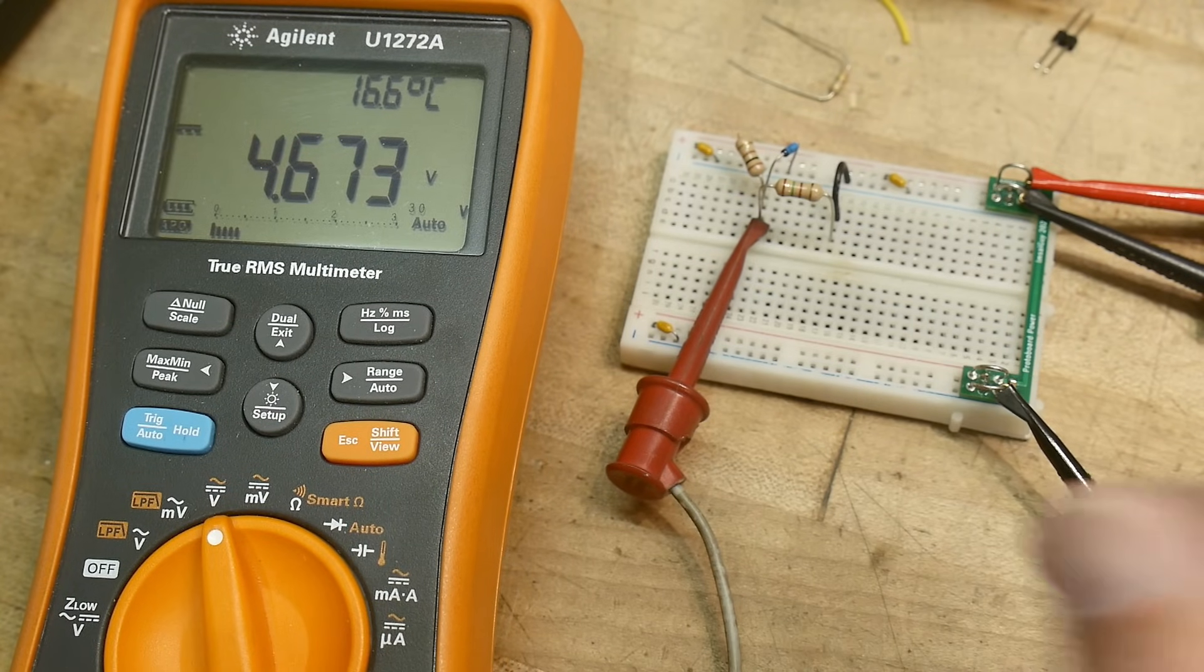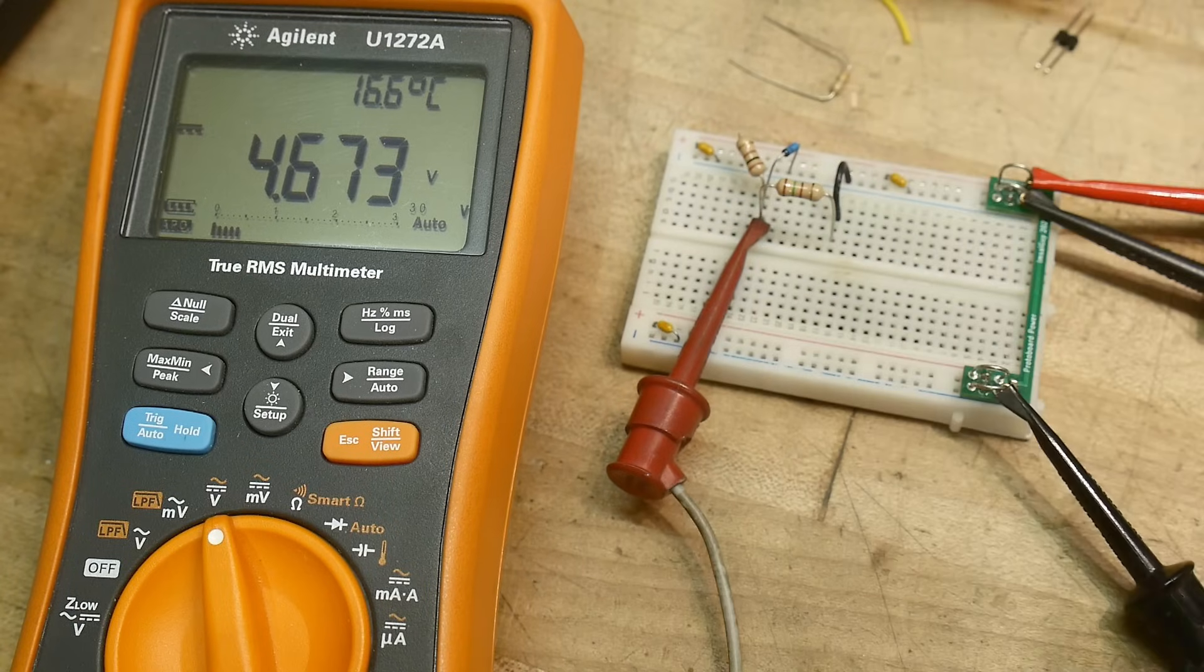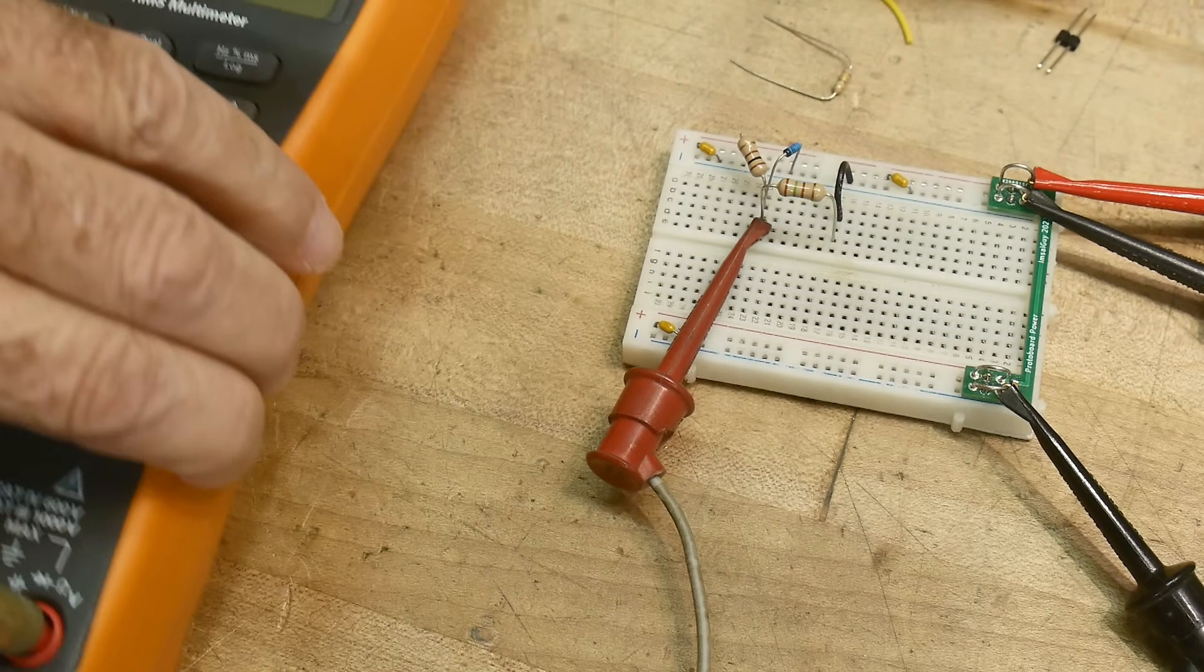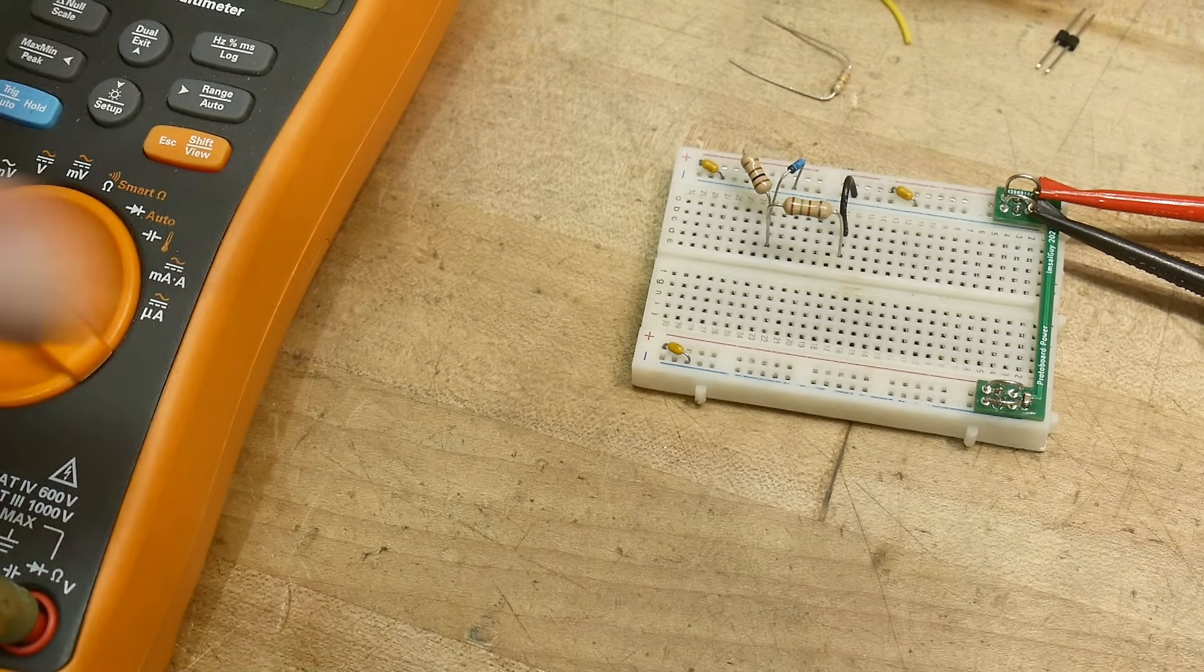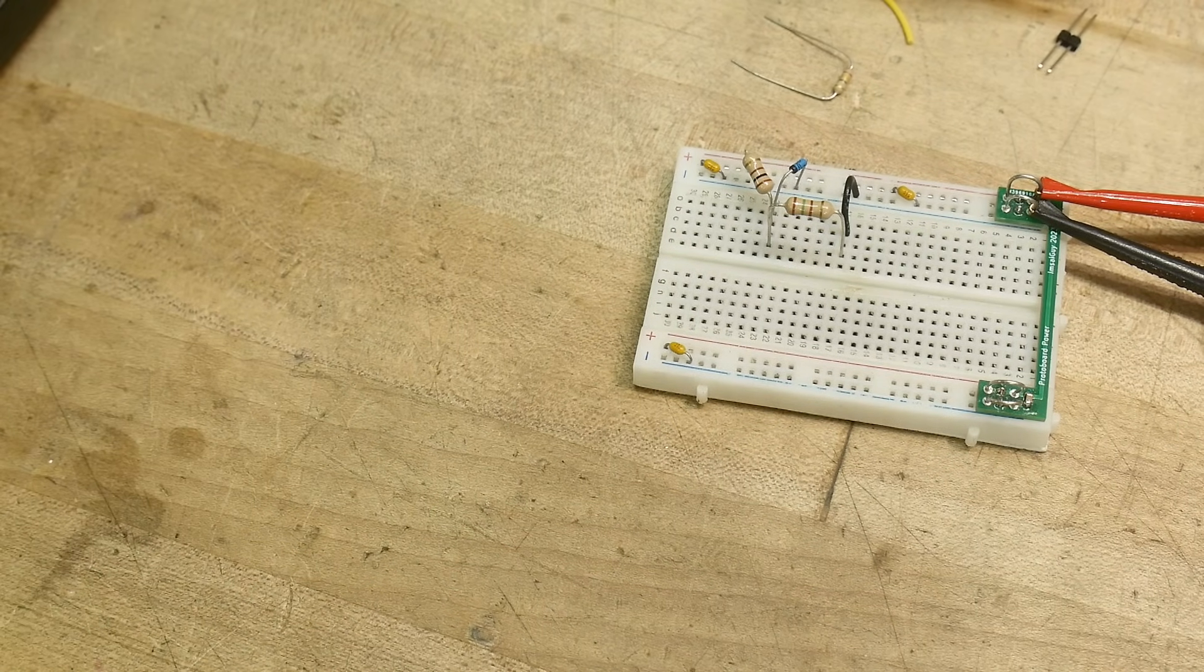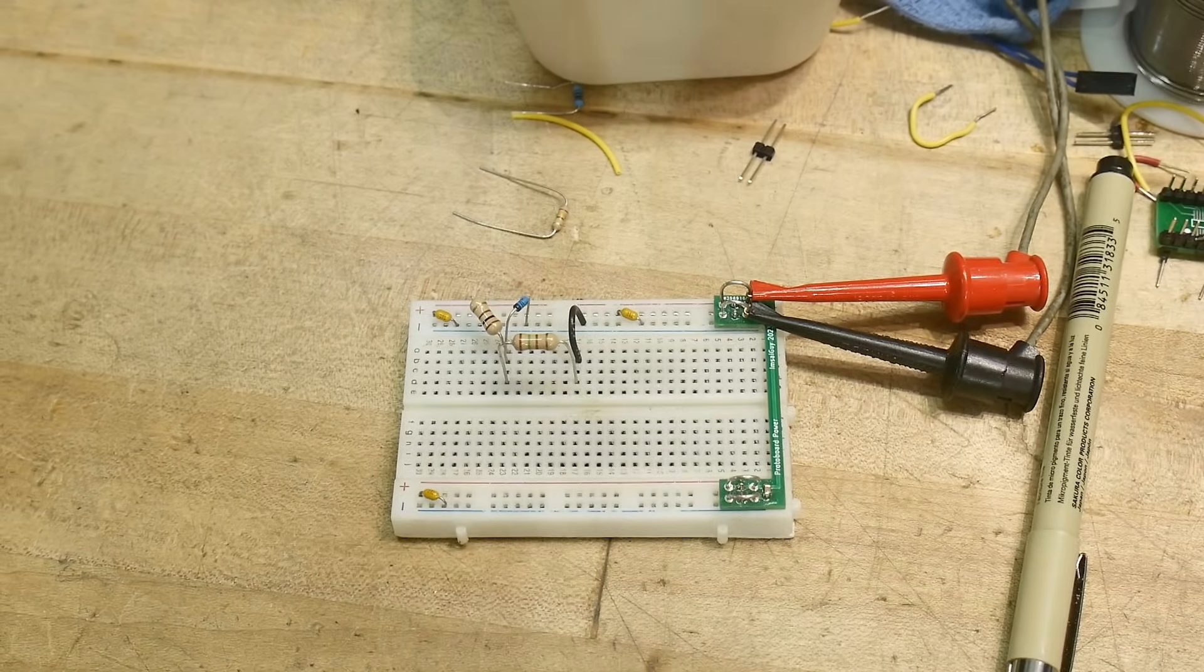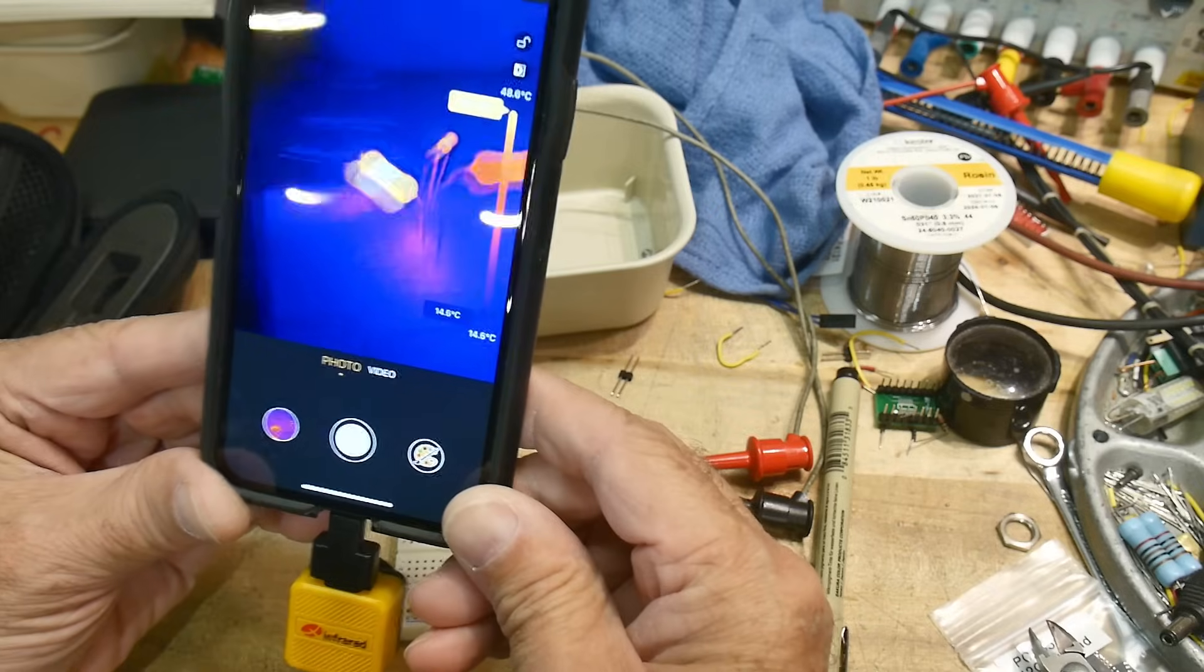And how much did I say we're dissipating normally? Quarter watt. Yeah. So a quarter watt will get toasty. I think people underestimate how hot resistors get. So let's go ahead and since I have one, let's go ahead and put a thermal camera on this thing. All right. Let's give us a picture here.